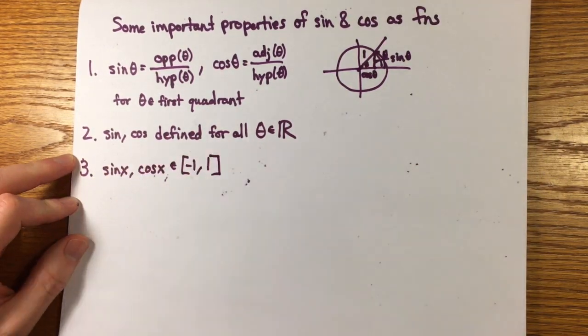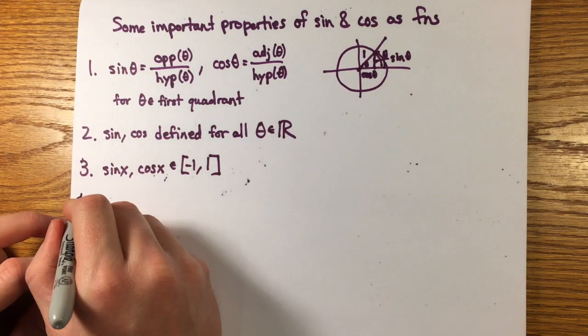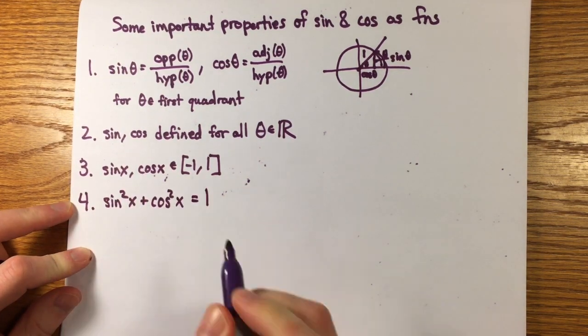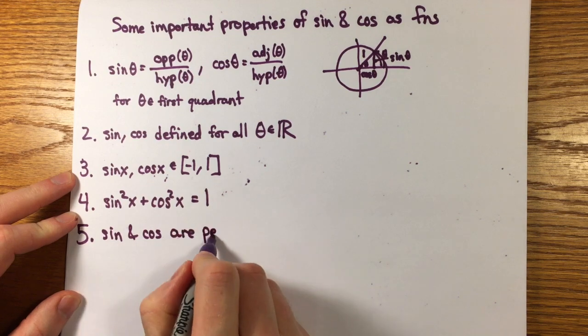Four, we have the identity for all real numbers, sine squared plus cosine squared equals 1 by the Pythagorean theorem. Five, sine and cosine are periodic functions with period c, the circumference of the unit circle.